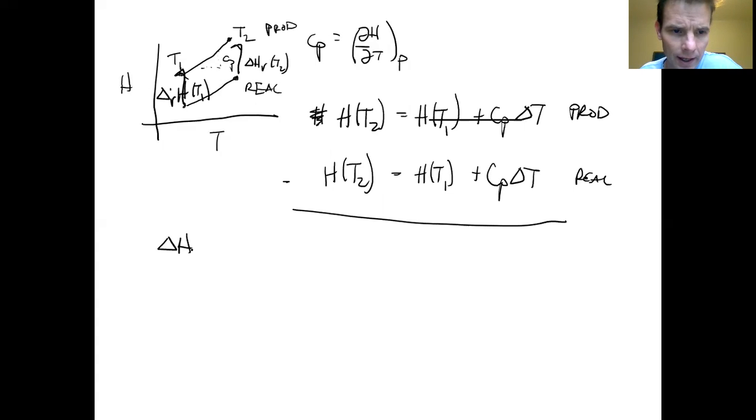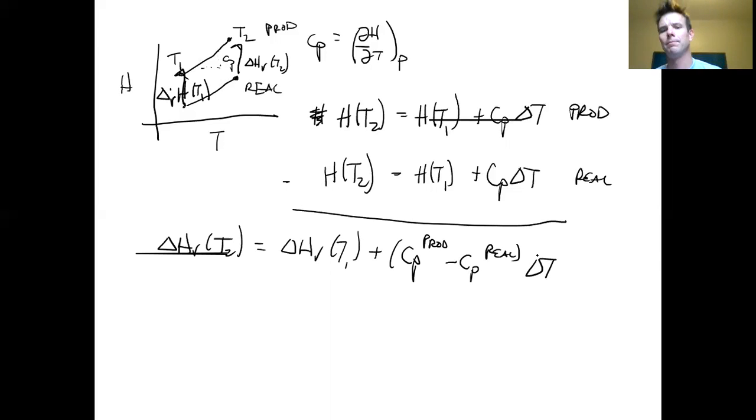Delta H of the reaction at T2 equals delta H of the reaction at T1 plus Cp of the products minus Cp of the reactants times delta T. That's it.